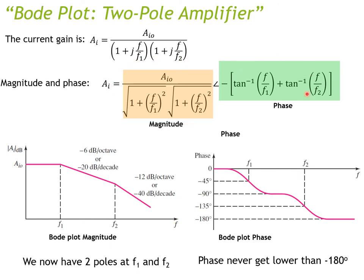Plotting the two-pole Bode magnitude plot: the gain stays flat at A_{i0} before f₁, then decreases at −20 dB/decade after f₁. When the second pole f₂ is crossed, the rate doubles to −40 dB/decade.